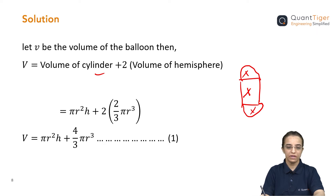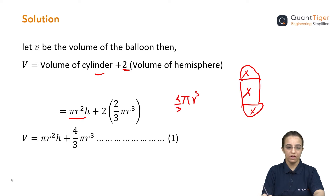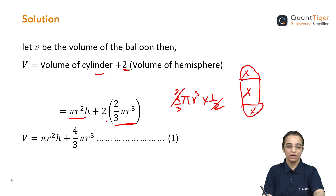Since there are two hemisphere ends, I multiply by two. Pi r squared h gives the volume of the cylinder. The volume of a sphere is (4/3) pi r cubed, but since it is a hemisphere we divide by two, giving (2/3) pi r cubed per hemisphere. Doubling it for both ends gives (4/3) pi r cubed total. Simplifying, we get the total volume equation: V = pi r squared h + (4/3) pi r cubed. I call this Equation 1.